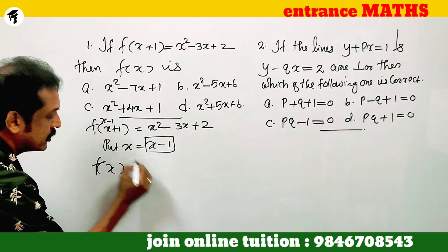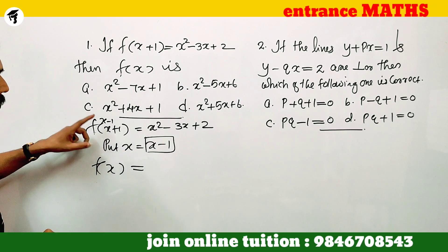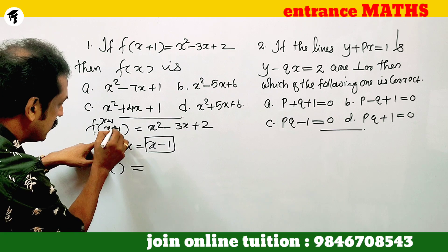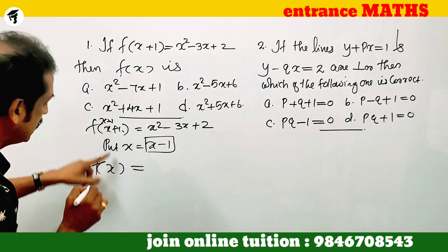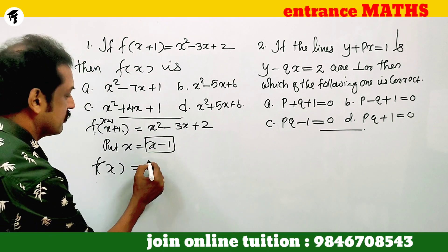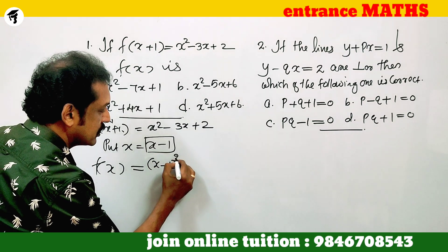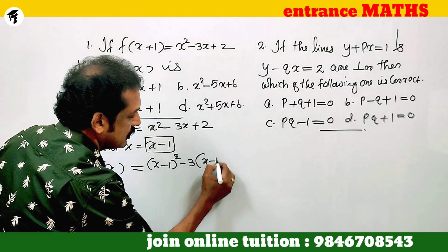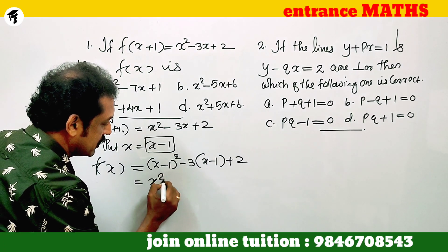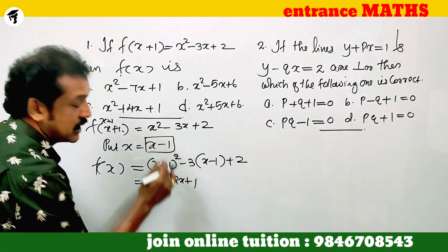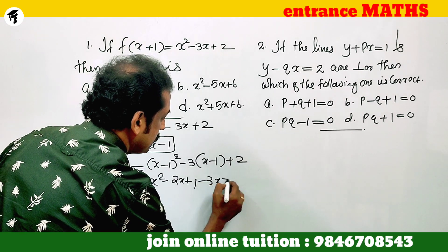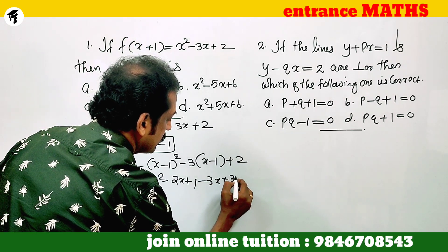If we let f of x equal to y, and substitute x minus 1 in place of x, then f of x minus 1 equals x minus 1 the whole square, minus 3 into x minus 1, plus 2. Expanding: x squared minus 2x plus 1, using the a minus b whole square formula.